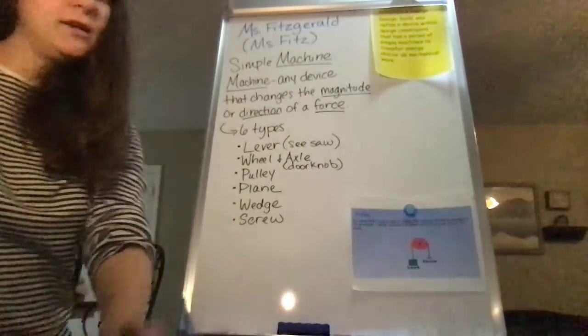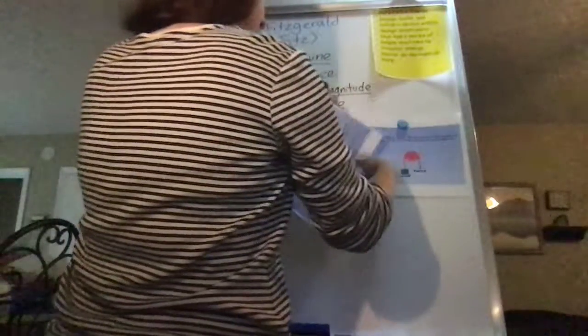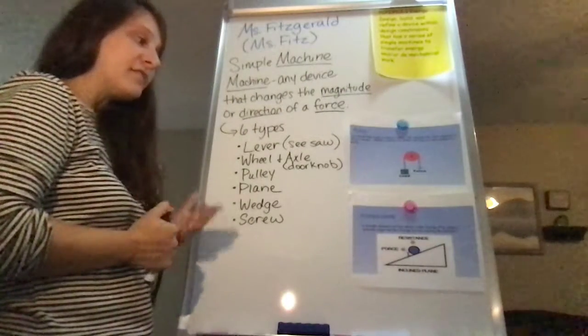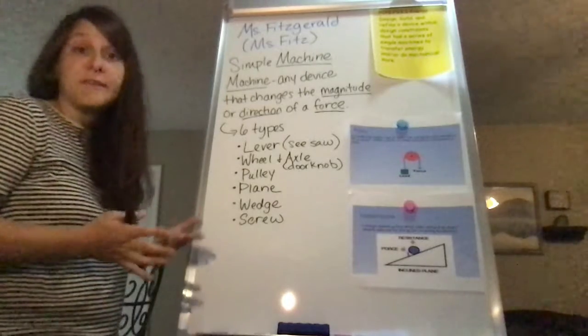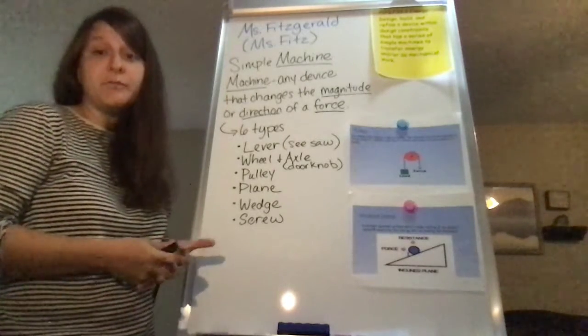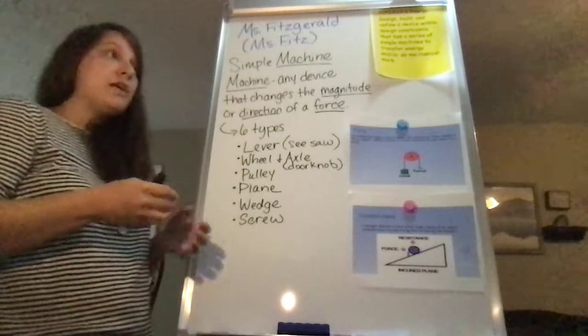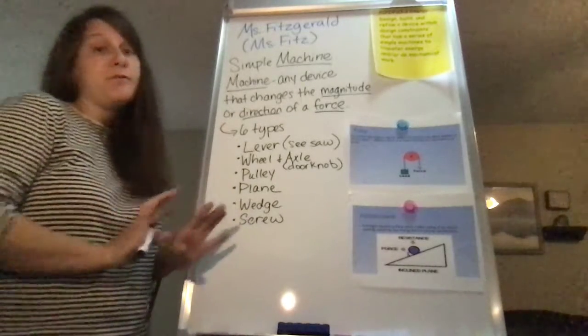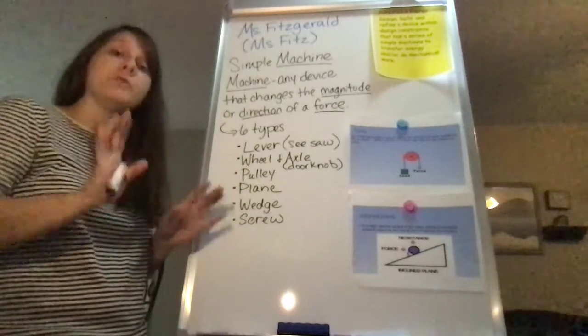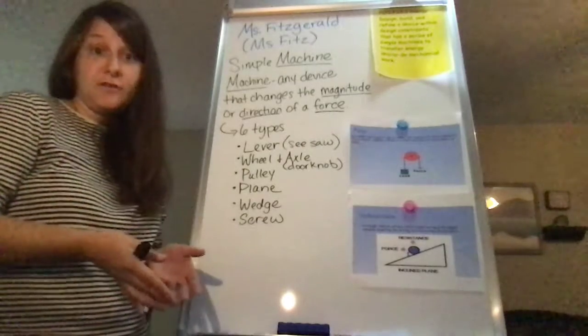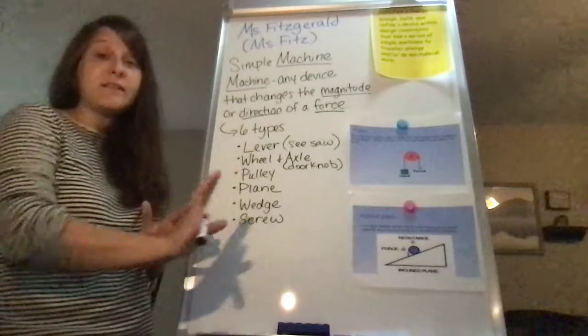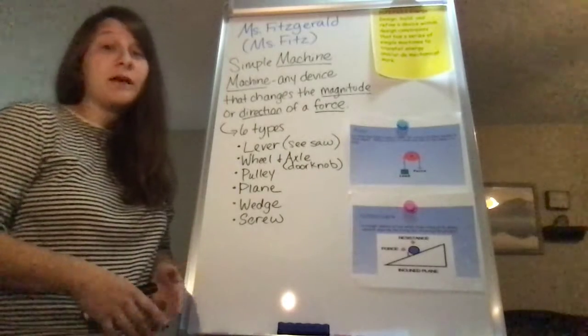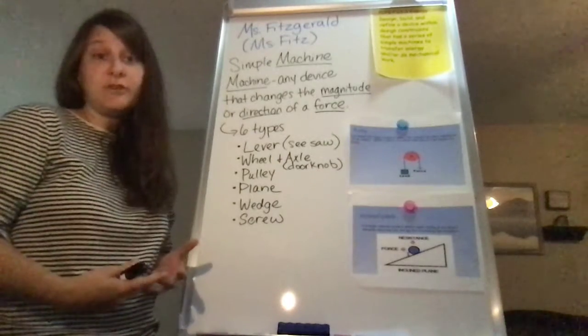Next, we have an inclined plane. So an inclined plane is any kind of slanted surface that makes raising an object easier. So if you think of, if you've ever had to move before, if you've ever used a ramp, it is easier. Think about loading a refrigerator into a moving truck. It's going to be way easier to load the refrigerator, walk it up a ramp, than it would be to take the refrigerator, lift it off the ground, and put it into the truck, right? So what the ramp does is it increases the distance over which you exert your force, but it actually makes your work easier. So you have to go further, but it's easier to do, okay?